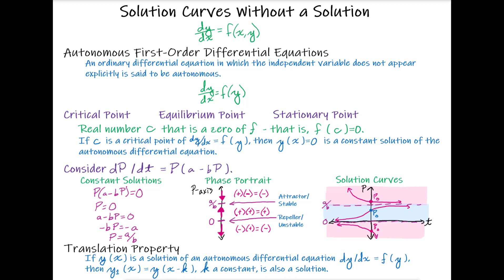If we check values greater than a over b for our p value, we'll find that the first term p is positive, while a minus b times p is going to be negative whenever p is greater than a over b. So we'll have a positive number times a negative number, which will be negative. Our derivative dp/dt will be negative, which means our function will be decreasing — which is why we've drawn an arrow pointing down on our phase portrait above a over b.